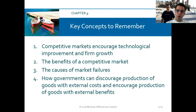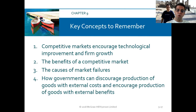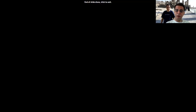In chapter nine, we talked about how the competitive market encourages technological improvement and firm growth, the benefits of a competitive market, and the causes of market failures. We also discussed how the government can discourage production of goods with external costs and encourage production of goods with external benefits.